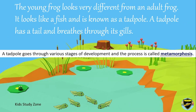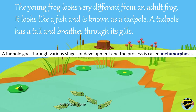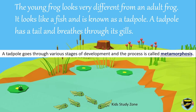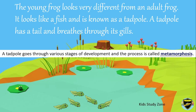The young frog looks very different from an adult frog. It looks like a fish and is known as a tadpole. A tadpole has a tail and breathes through its gills. A tadpole goes through various stages of development, and this process is called metamorphosis.